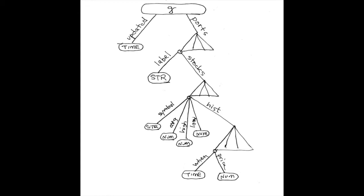The global state for this app consists of a time when we were updated, and then there's an array of portfolios. Inside each portfolio there's a label — the name for the portfolio — and then an array of stocks. Inside each stock there is a symbol, the average price, the high price, and the low price for the time period. Then there's another thing called the history, which is an array of prices and dates. You might store the last 50 prices for a stock — that's the stock history.